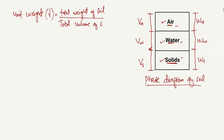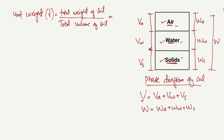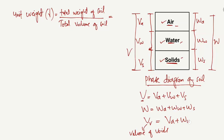The total volume of soil is represented by V, and it equals the volume of air plus the volume of water plus the volume of solids. The total weight of soil is represented by capital W, and equals the weight of air plus weight of water plus weight of solids. Also, VV is known as the volume of voids, represented by VV, and it equals the volume of air plus the volume of water.